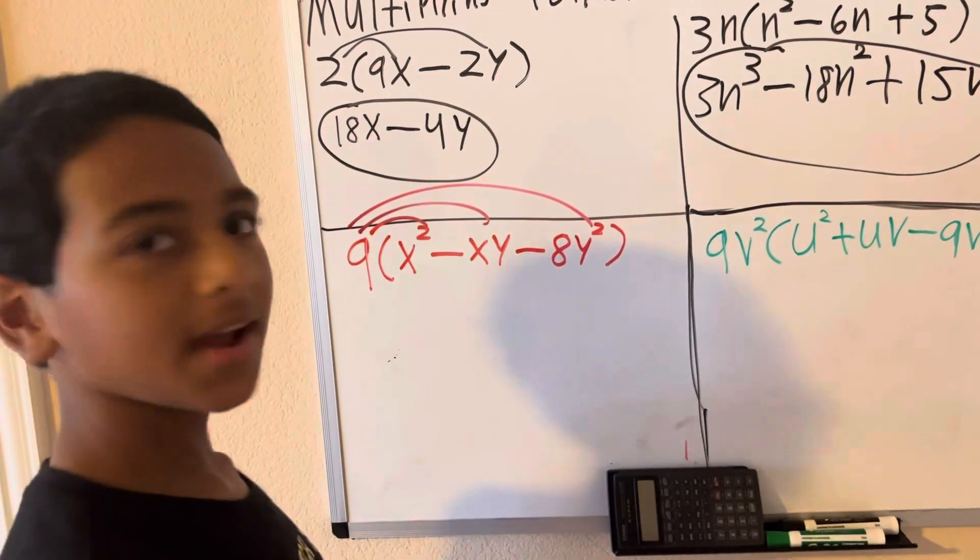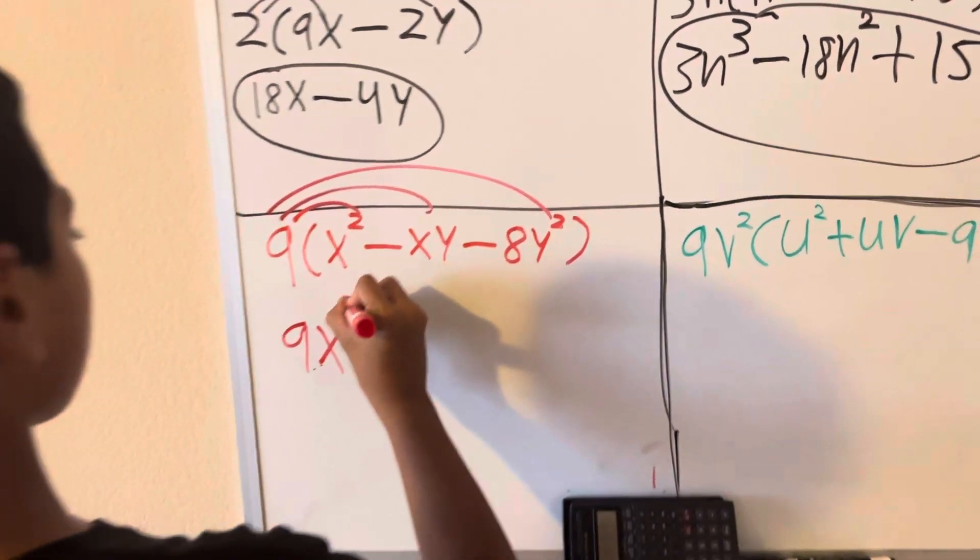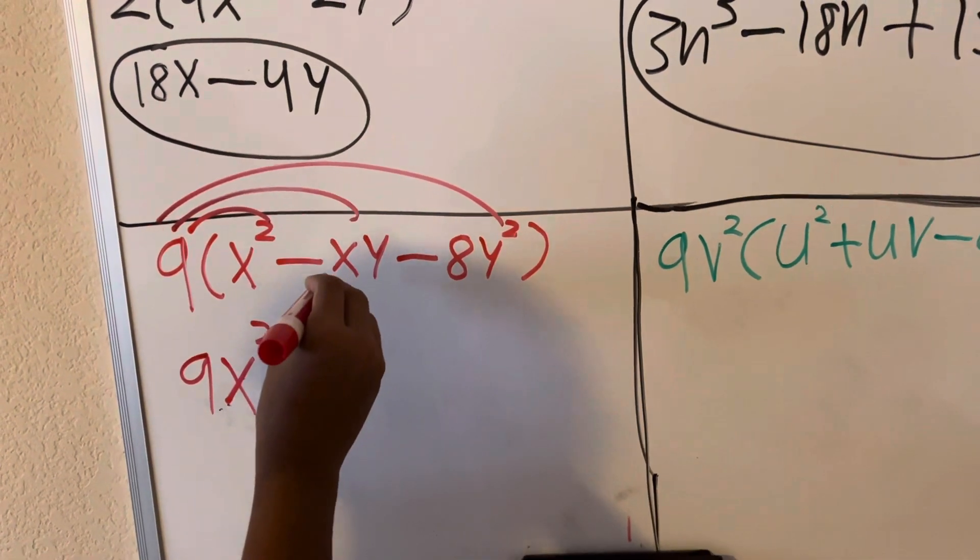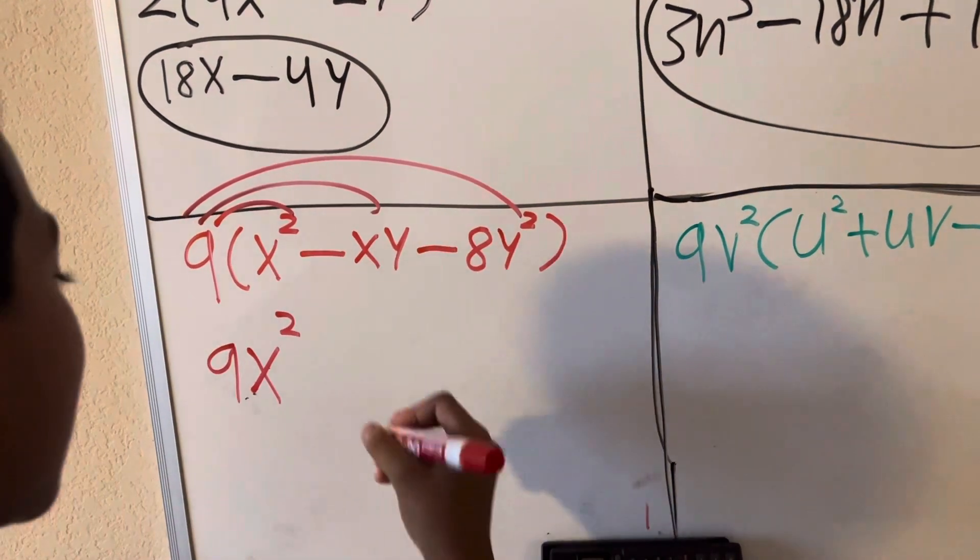9 times x squared is 9x squared. Negative x times y times 9 is minus 9xy.